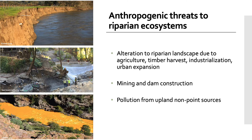However, the health and function of riparian ecosystems are impacted by several threats. Alteration to natural riparian landscapes due to agriculture, timber harvest, industrialization, and urban expansion have modified or completely removed native riparian vegetation, leading to stream bank instability and loss of wildlife habitat. Additionally, mining and dam construction contribute to excessive sediment deposited into streams. And finally, pollution from upland non-point sources threatens aquatic, terrestrial, and human communities.